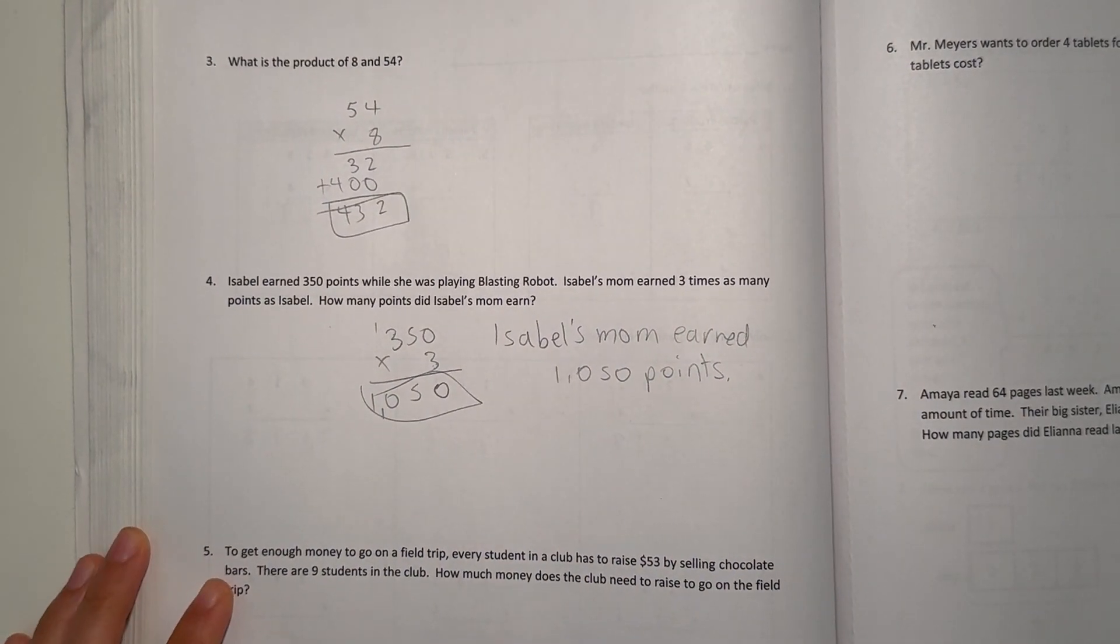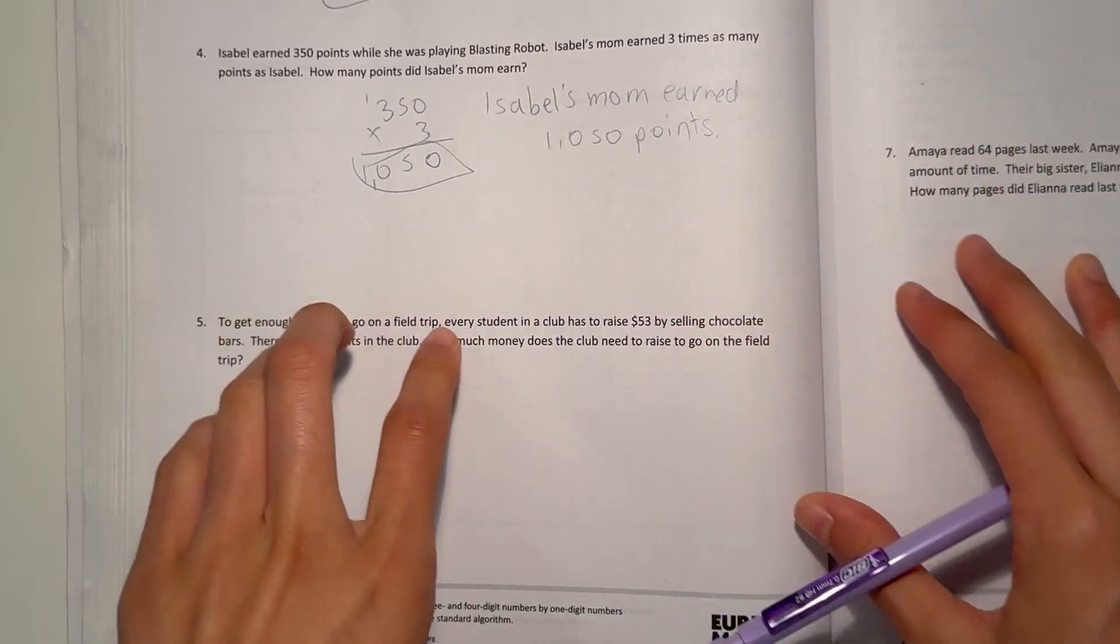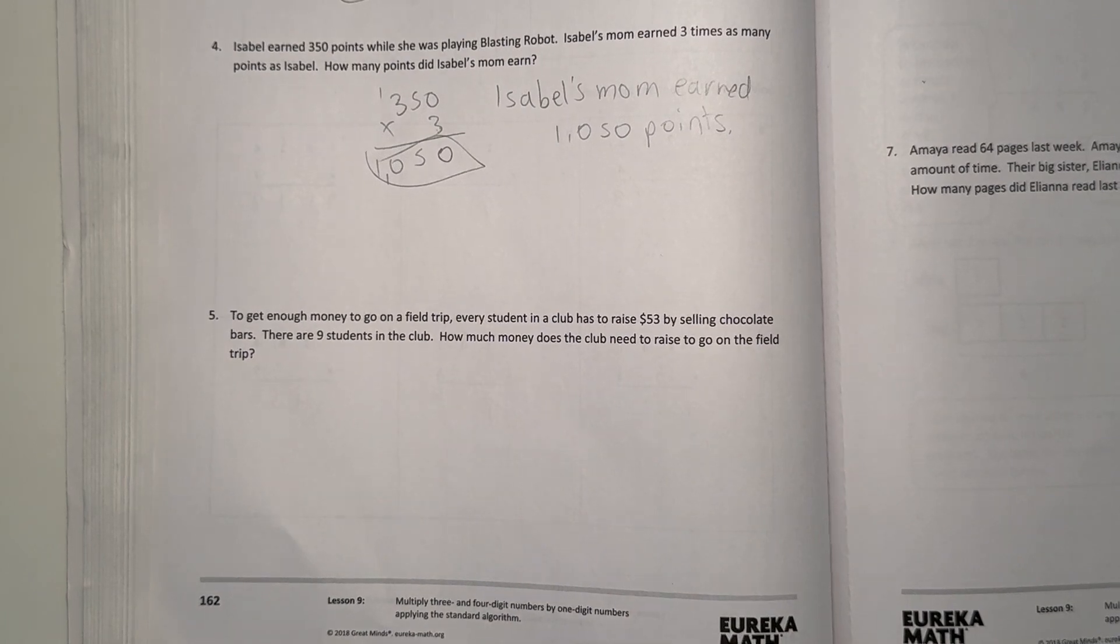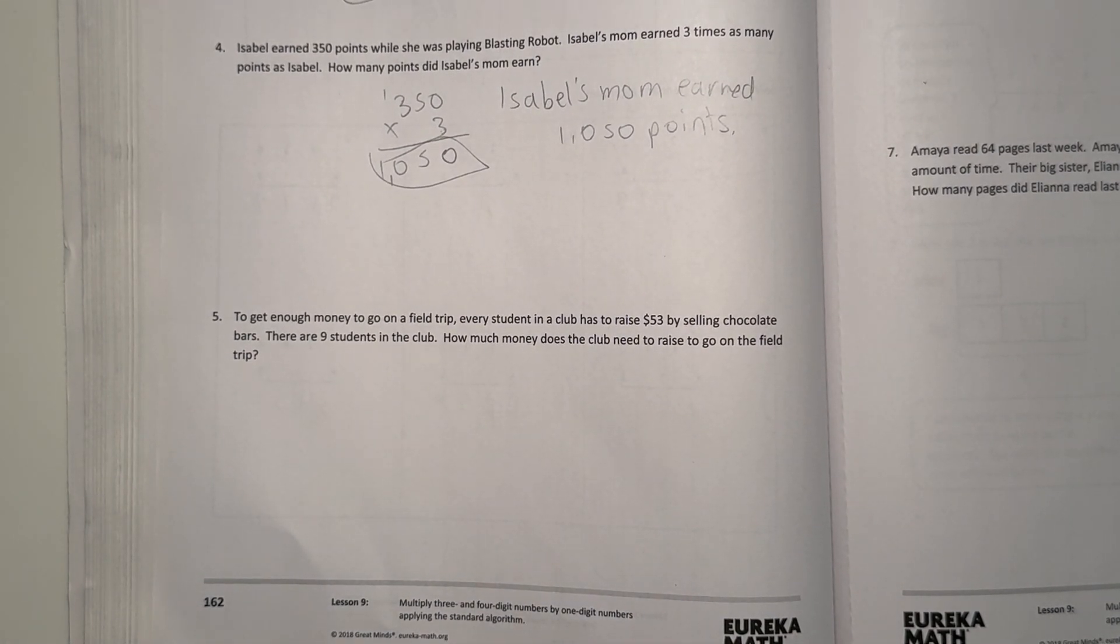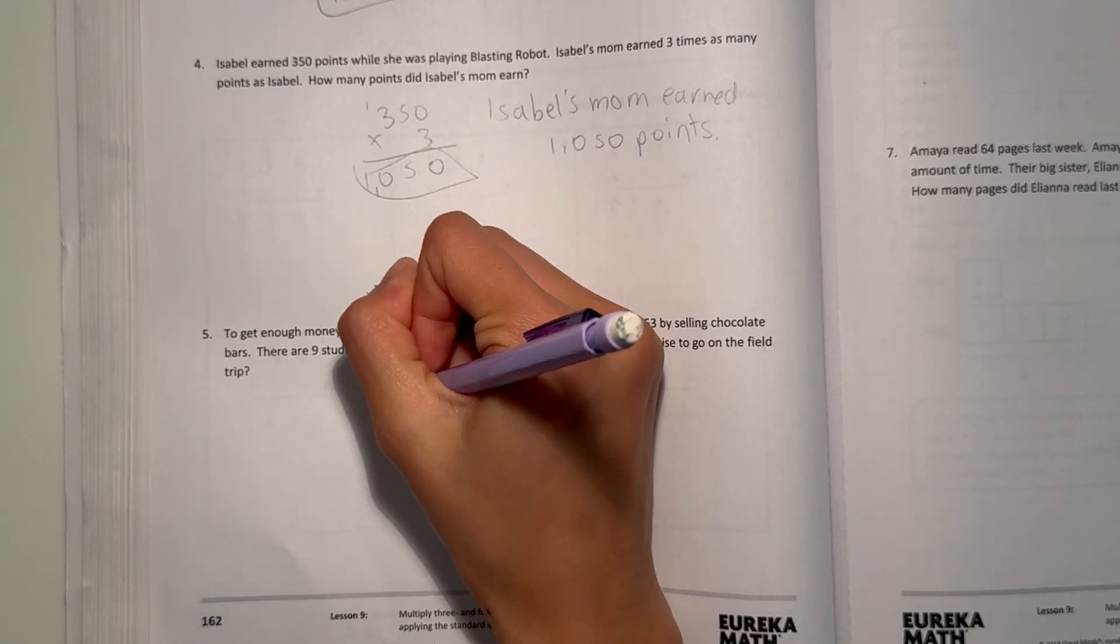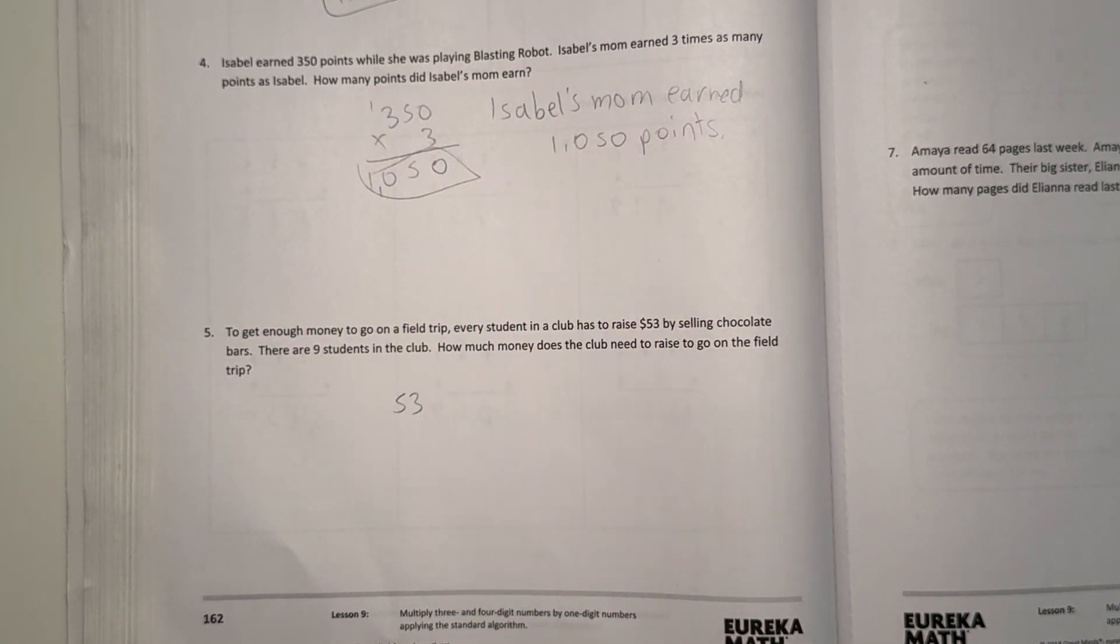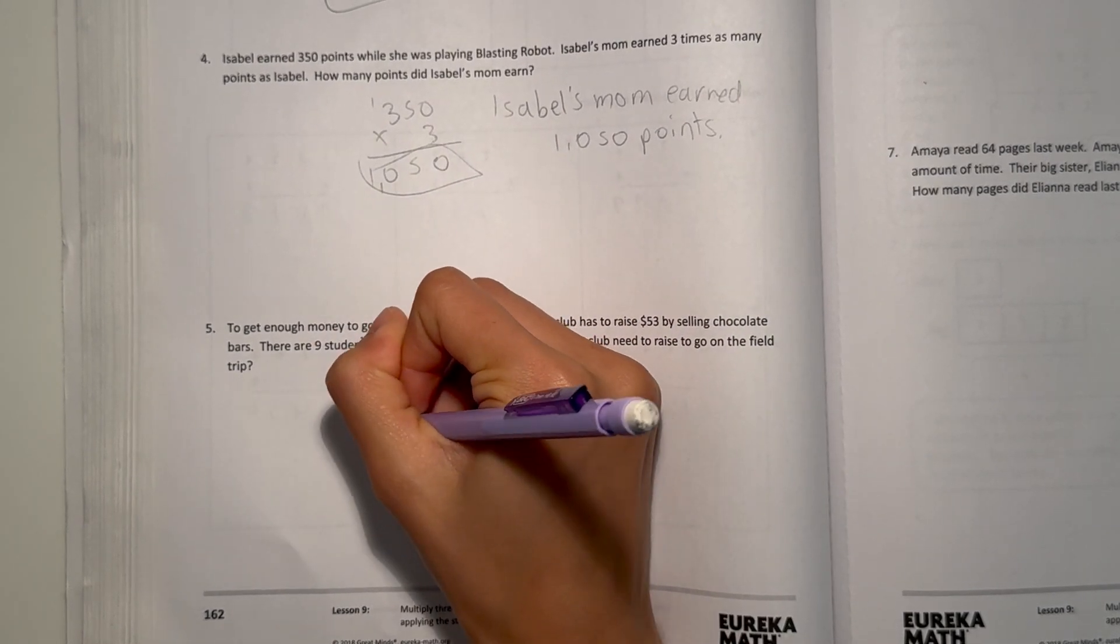Number 5, to get enough money to go on a field trip, every student in a club has to raise $53 by selling chocolate bars. There are 9 students in the club, how much money does the club need to raise to go on a field trip? So, $53, and each student raises $53, and there's 9 students. So, times 9.